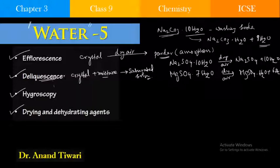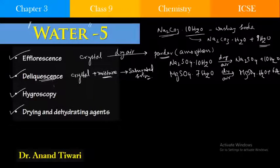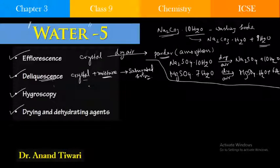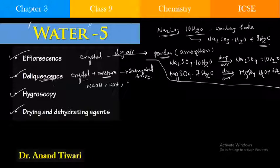Deliquescence occurs when the vapor pressure inside the crystal is very low compared to the vapor pressure in the atmosphere. To reduce this phenomenon, you simply reduce the moisture — keep that particular salt or crystal in a dry atmosphere. Examples of deliquescent substances include caustic soda (sodium hydroxide), caustic potash (potassium hydroxide), magnesium chloride, zinc chloride, calcium chloride, and ferric chloride.